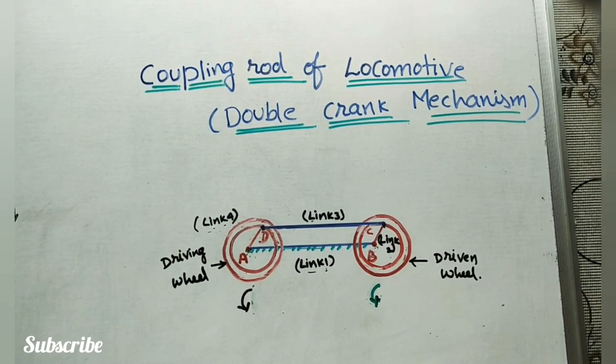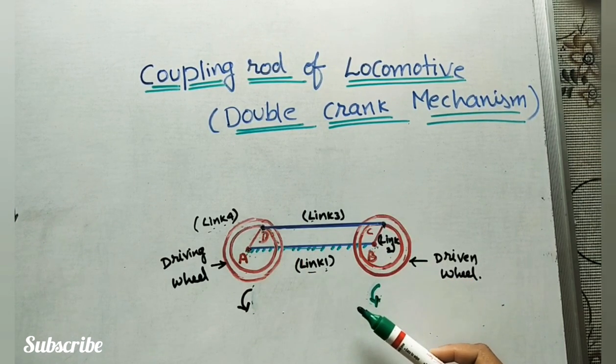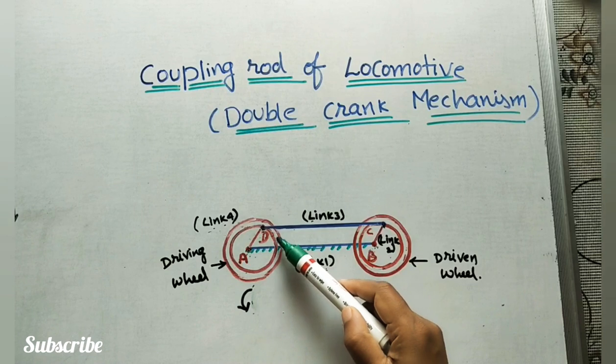As we know, this mechanism has four links because it is a four bar chain mechanism. In four bars, four links, two are the cranks AD and BC of equal length. As we know, cranks can make complete rotation.